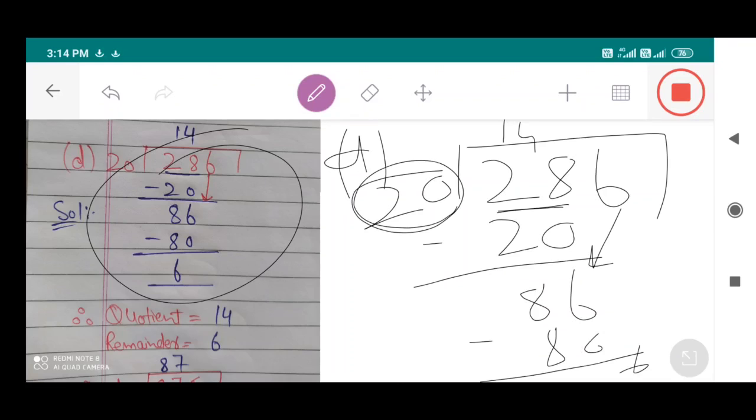286 is the dividend, 20 is the divisor, 14 is the quotient, and 6 is the remainder.